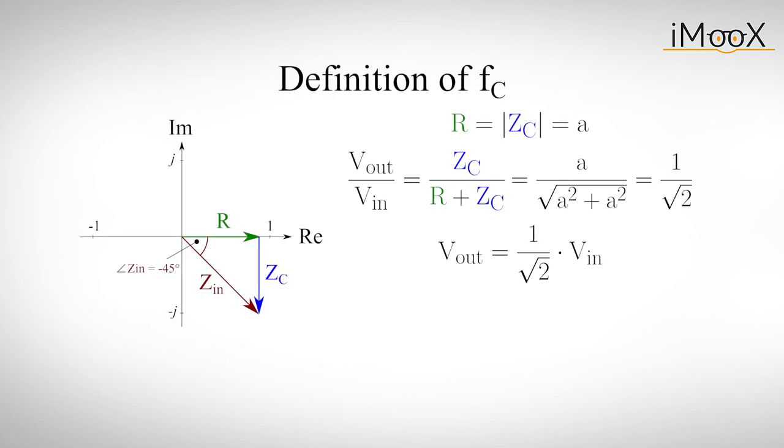Actually, the definition of the corner frequency comes from the input and output power of the circuit. Since the amplitude of the output voltage at this point is one over the square root of two times the input voltage, the output power, which is proportional to the square of the output voltage, is exactly half of the input power. Makes sense, doesn't it?